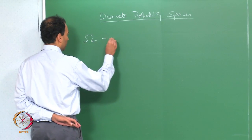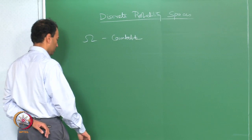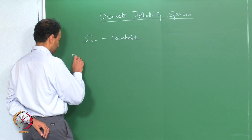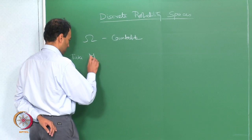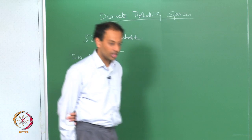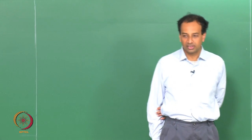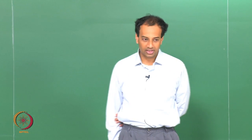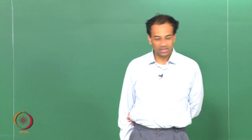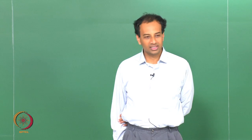When omega is countable, we can always take F equal to 2 power omega — the set of all possible subsets of the sample space — as the sigma algebra. In fact, we will be able to assign probabilities to all subsets of the sample space. In the case of discrete probability, all subsets of omega are in fact events.